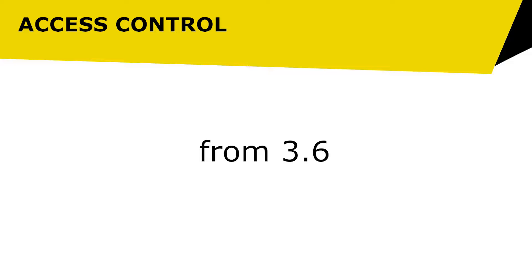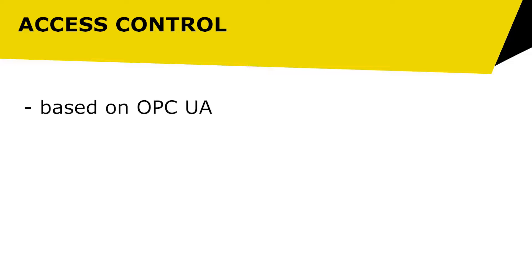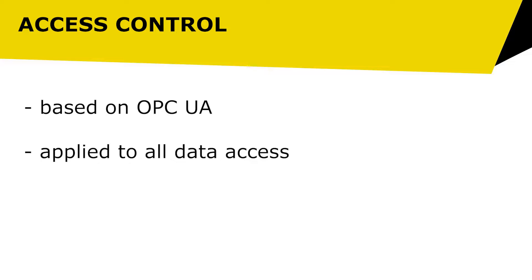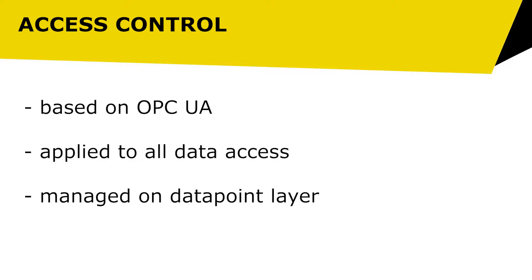The new access control features are available from Advice version 3.6. The Advice access control is based on the OPC UA access control feature and is applied to all data access. The access control is implemented into all layers of the Advice station, starting from the change of values up to adding data sources to the project. It is possible to create flexible flat or hierarchical authorization structures.